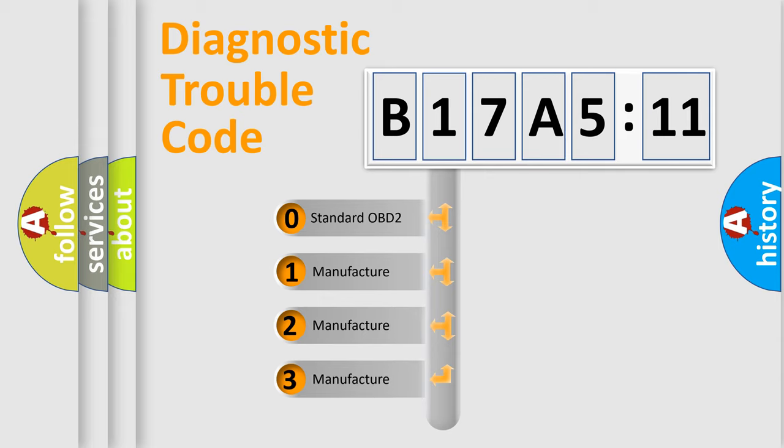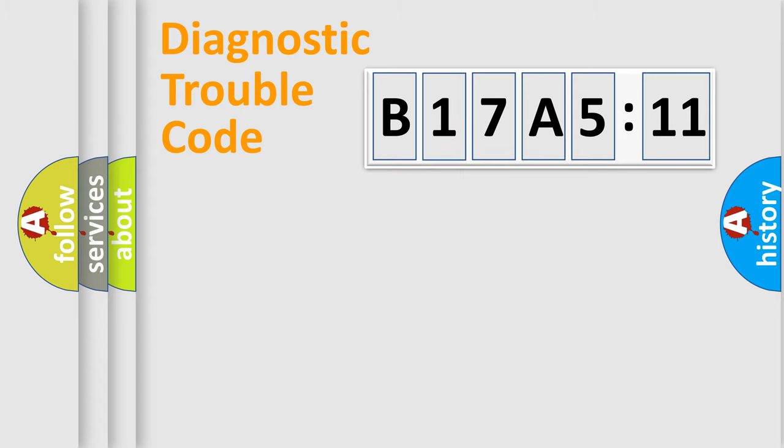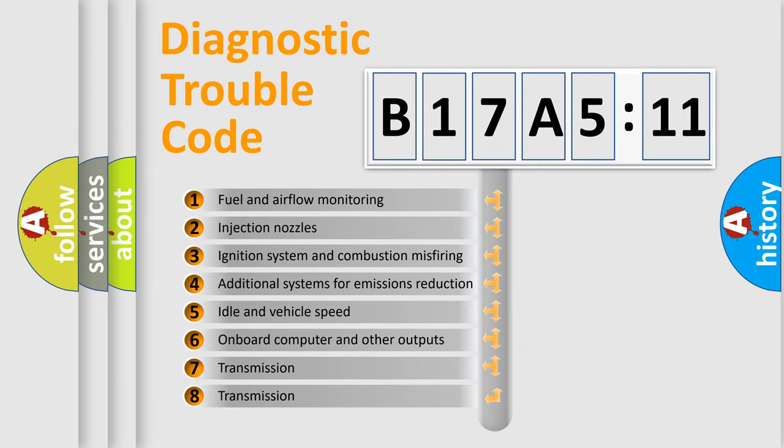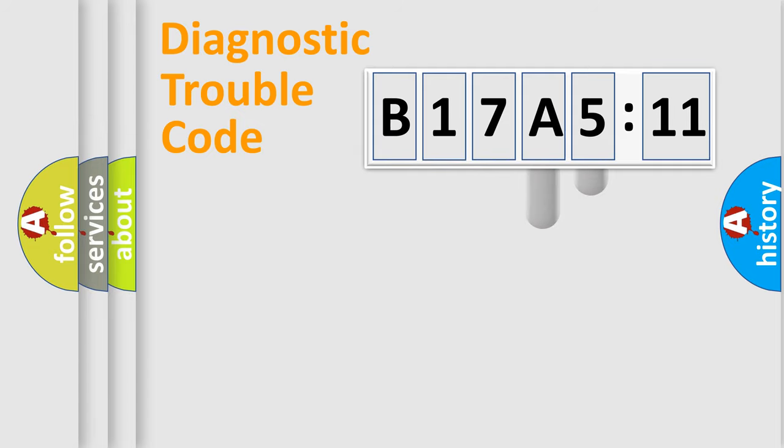If the second character is expressed as zero, it is a standardized error. In the case of numbers 1, 2, 3, it is a more prestigious expression of the car-specific error. The third character specifies a subset of errors. The distribution shown is valid only for the standardized DTC code. Only the last two characters define the specific fault of the group.